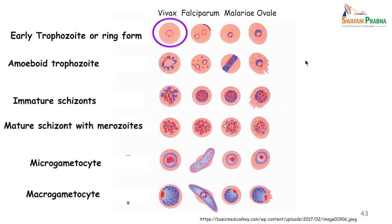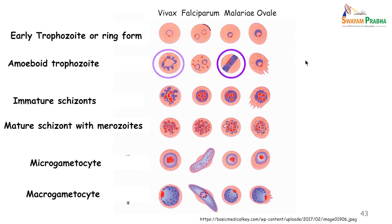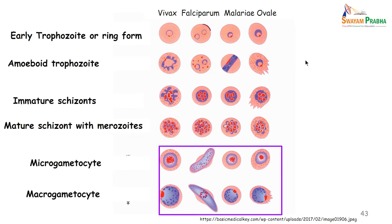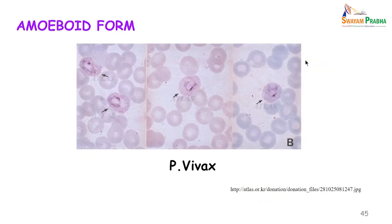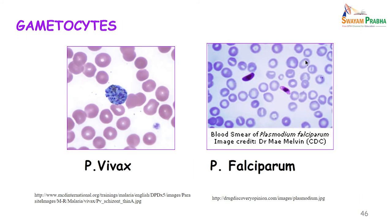In the peripheral blood smear: P. vivax shows a single ring form and an amoeboid form; P. falciparum shows a double ring form and possibly a cold formation; P. malariae appears like a band. The late trophozoite, immature schizont, and mature schizont are not seen in the peripheral blood smear of P. falciparum. Gametocytes of all species are seen in the peripheral blood smear — rounded in P. vivax, spindle-shaped in P. falciparum.